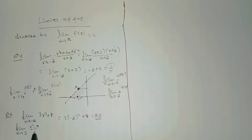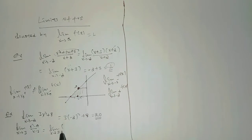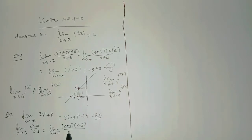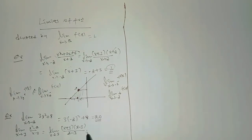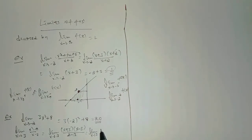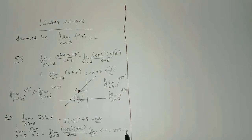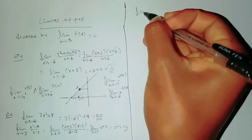Next example: limit x goes to 3 of (x² - 9) over (x - 3). We factor the numerator: (x + 3)(x - 3) over (x - 3), simplifying by canceling (x - 3). This gives limit x goes to 3 of (x + 3), so substituting x equals 3: 3 plus 3 equals 6.